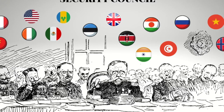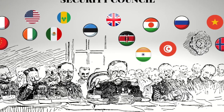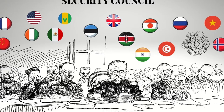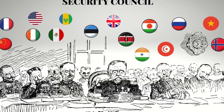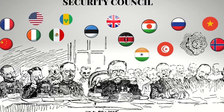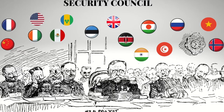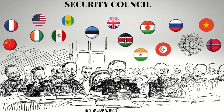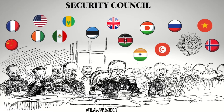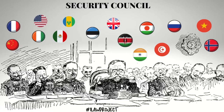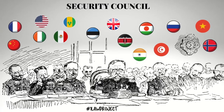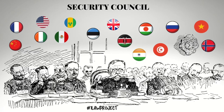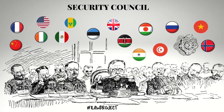For the 24th lecture in this lecture series, we will be exploring another of the principal organs of the United Nations established in Article 7 of the United Nations Charter — the Security Council. In this lesson, we will be discussing the function, composition, and mode of operation of the Security Council.